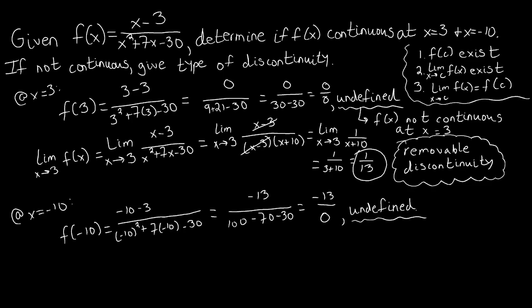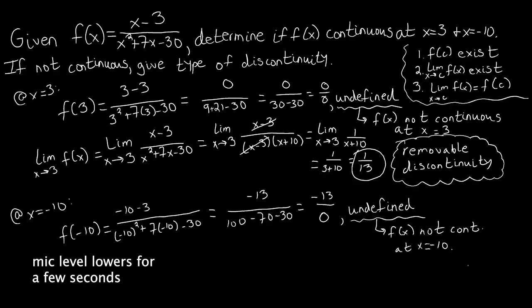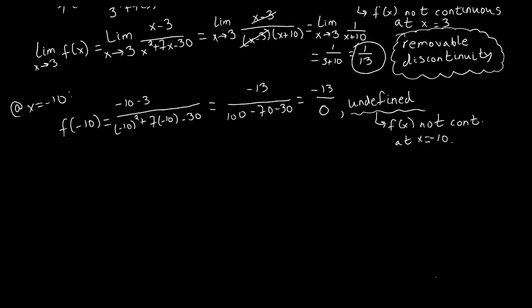Once we see that f(-10) is undefined, we know that f(x) is not continuous at x=-10. Now that we've determined that, we ask: what type of discontinuity occurs at x=-10? In order to determine that, we need to look at the limit as x approaches -10.